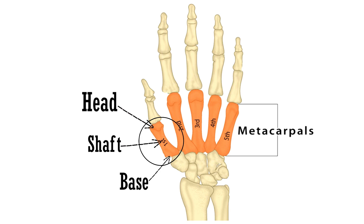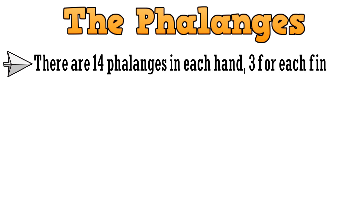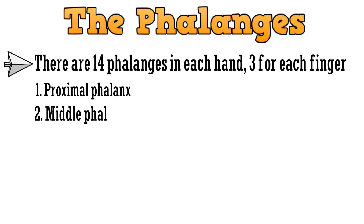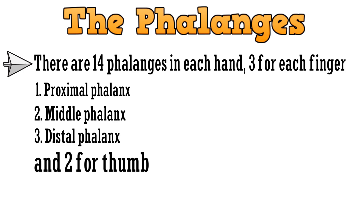With this, we complete the metacarpals and move on to the last part — the phalanges. There are 14 phalanges in each hand: 3 for each finger — proximal phalanx, middle phalanx, and distal phalanx — and 2 for the thumb, the proximal and the distal phalanx.